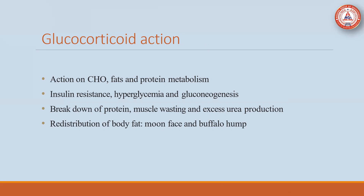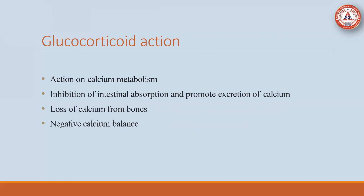Glucocorticoid is also useful in the breakdown of protein, muscle wasting, and excessive urea production. Redistribution of body fat, moon face, and buffalo hump are due to excessive secretion of glucocorticoids. Glucocorticoid also plays a very important role in calcium metabolism — it inhibits intestinal absorption and promotes excretion of calcium. Loss of calcium from the bone is due to excess glucocorticoids, maintaining a negative calcium balance.